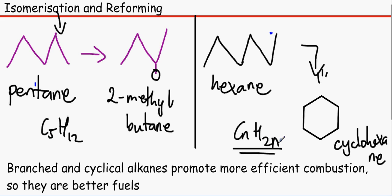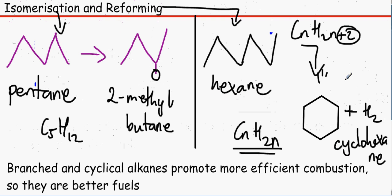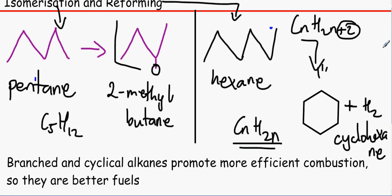Cycloalkanes have a different formula to alkanes itself, which means we have 2 hydrogen atoms missing. They have been broken off to make a diatomic molecule, which is H2. Whenever you are reforming it, it would make H2. It's very important that you know the difference between isomerization and reforming. The reason why we do this is because these that I have made are actually really efficient in burning. It has a lower boiling point. It is more volatile, and therefore, it's much better at combustion.